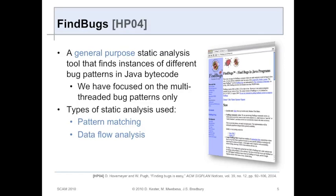The first tool was FindBugs. FindBugs is actually a general purpose static analysis tool, so it does find more than multi-threaded bugs. We are focused on the concurrency bugs specifically, though. It uses two forms of static analysis: pattern matching and data flow analysis.